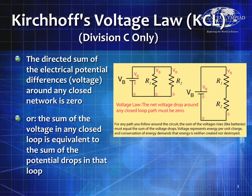Looking at two examples on the right: if I go around from the lower left-hand corner through R1 and back, that tells me that VB minus the voltage of R1 equals zero, or VB is equal to the voltage of R1. Doing the same loop through R2, VB is also equal to the voltage of R2. Doing the loop of just the resistors tells me the voltage of R1 equals the voltage of R2, and they're all equal to VB.